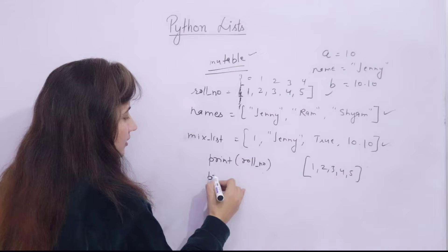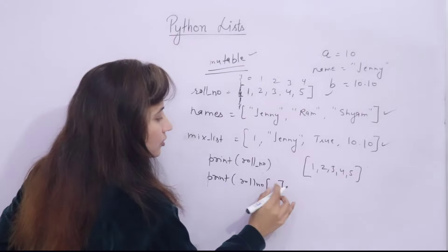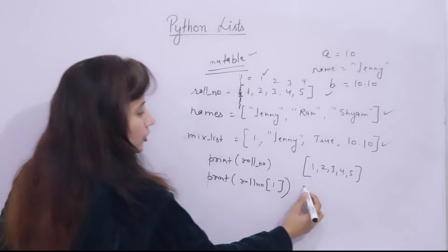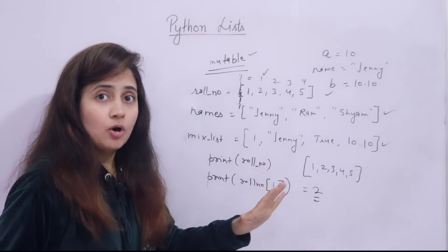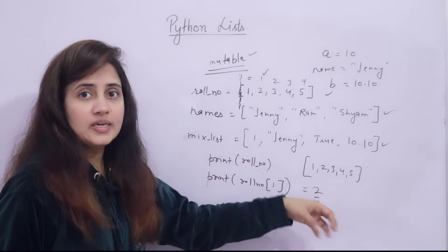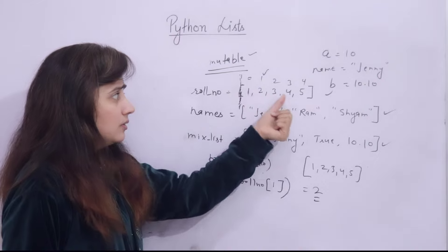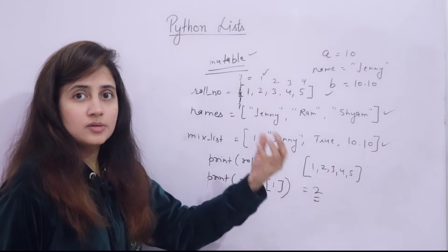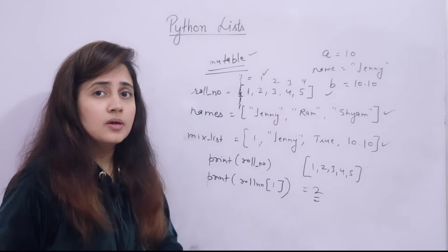Using index we can access like: print(row_number[1]) — suppose I put index 1, then at index 1, what is there is 2, so it will print 2. You can access individual elements also. And many operations we can perform on list — like we can sort, reverse, append more data, extend the list, count the occurrence of items, find out index of individual item, find out length, minimum or maximum. Many methods are there. Those methods we will be discussing with the help of a program practically.